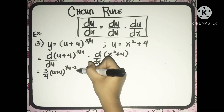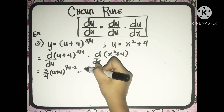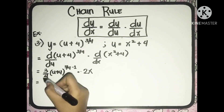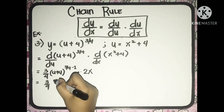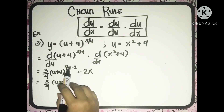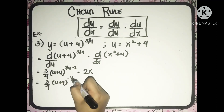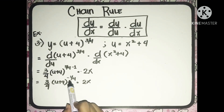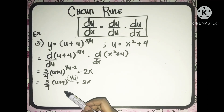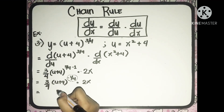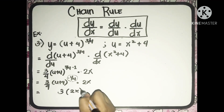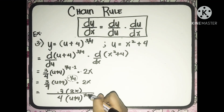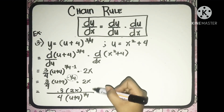Then multiplied to the derivative of x squared plus 4, which is 2x. So we have 3 over 4 multiplied to u plus 4, and 3 fourths minus 1 is equal to negative 1 fourth, multiplied to 2x. Since we have a negative exponent, we place it in the denominator for it to be positive. So what will be left in the numerator is 3 multiplied to 2x, over 4 multiplied to u plus 4 raised to 1 fourth. Let's simplify — multiply the numerator: 3 times 2x equals 6x, all over 4.